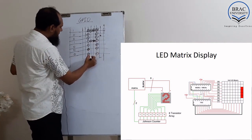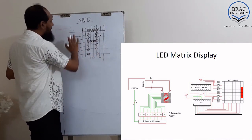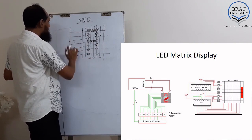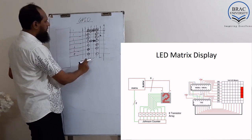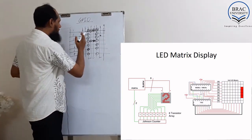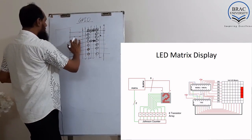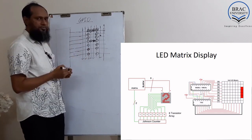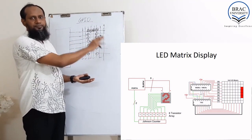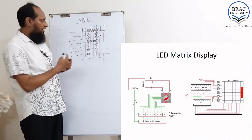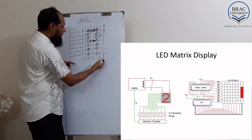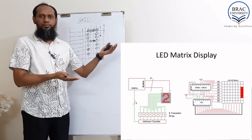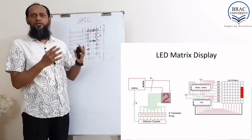After that, when it selects the next row, the same thing happens. When it selects a particular row, it gives 1 to all the pins so all LEDs glow. For rows requiring no display, all pins get 0. This row-by-row process is called scanning — one scan, then it starts again from the beginning and repeats.